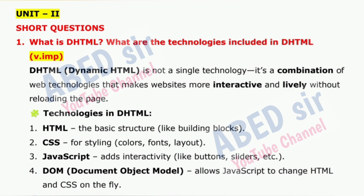Technologies in DHTML: 1. HTML — the basic structure, like building blocks. 2. CSS — for styling: colors, fonts, layout. 3. JavaScript — adds interactivity like buttons, sliders, etc. 4. DOM, Document Object Model — allows JavaScript to change HTML and CSS on the fly.